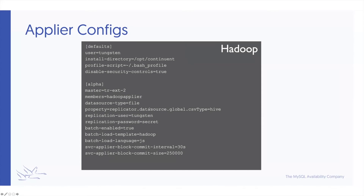For the Hadoop config it's pretty much the same, except the data source type is 'file' because we're writing CSV into HDFS. We set the CSV type to Hive to ensure the right format and line terminations. batch_enabled is true, the template is Hadoop, load language is JS for JavaScript, and then block_commit_size and block_commit_interval apply here as well.